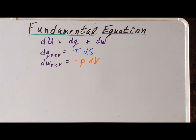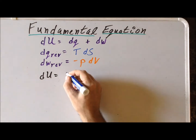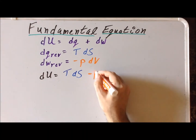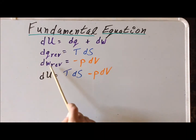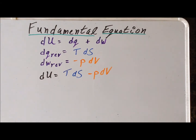This suggests that we can combine the first equation and these two expressions into a general equation, where dU is equal to TdS minus pdV. Notice that while the expression TdS is for a reversible process, and the expression for dw was for a reversible process, their sum refers to the internal energy. The internal energy is a state function and it is independent of path, which means this applies whether we have a reversible process or an irreversible process.